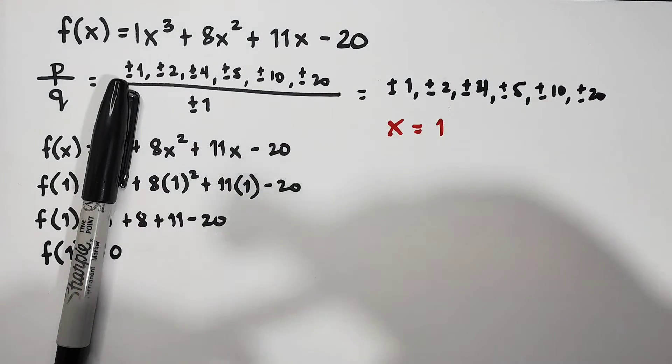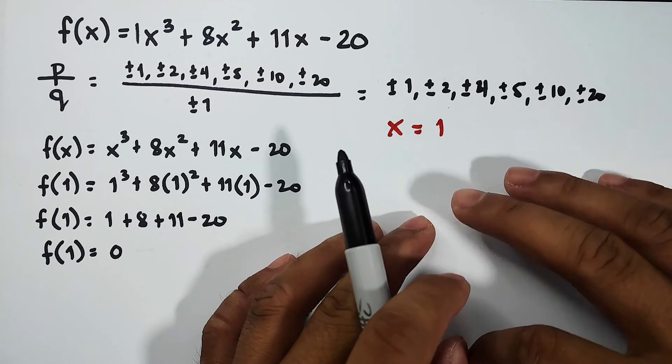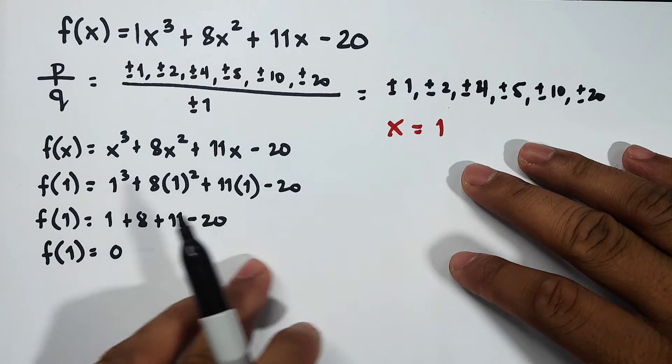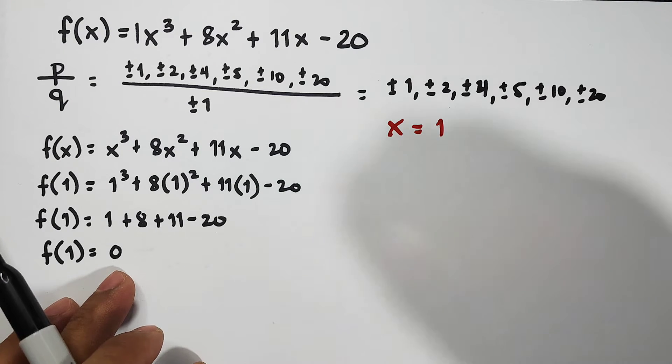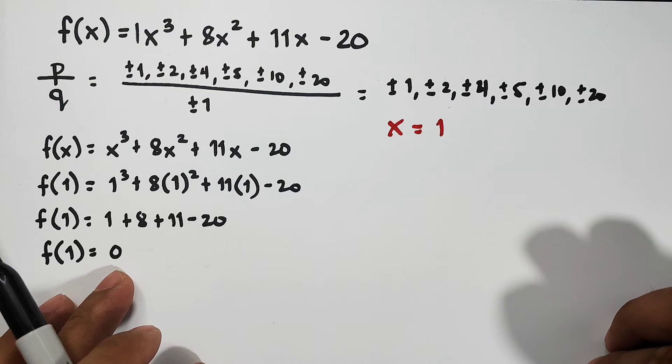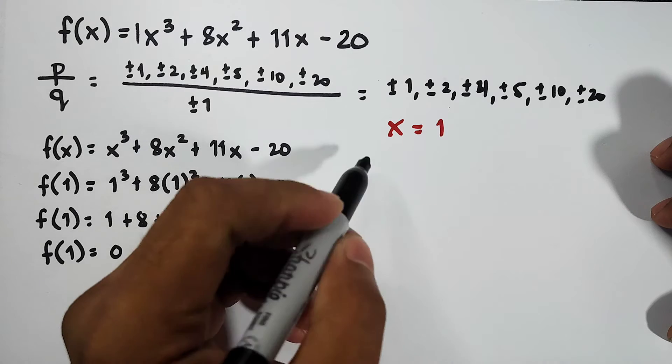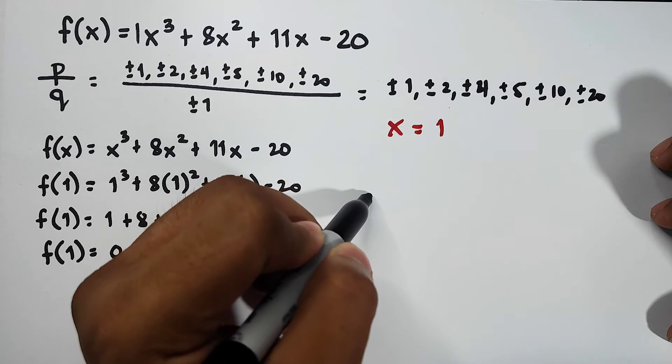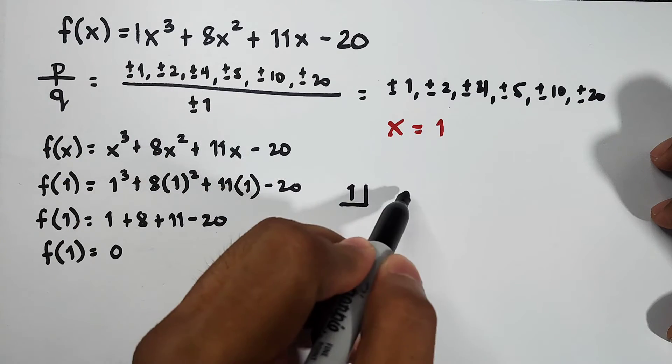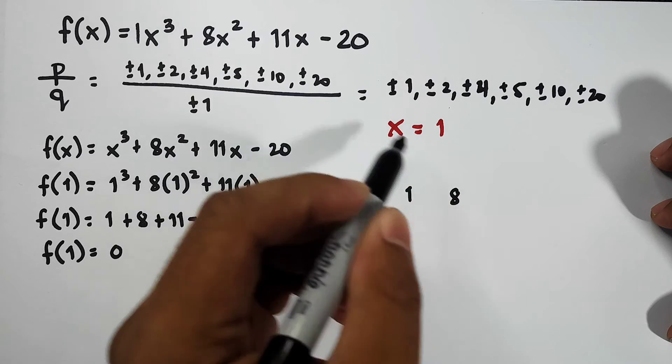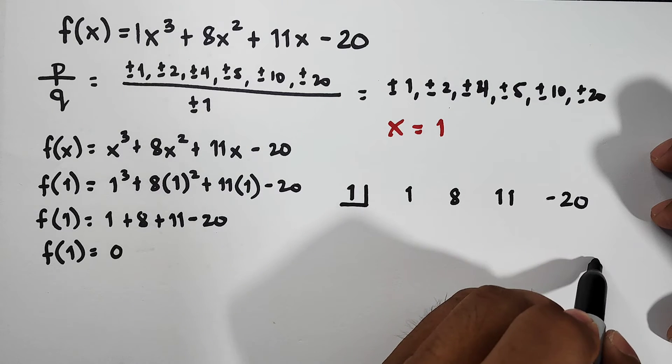Now after this, since we used the rational zero theorem to get the first factor and evaluated it in the given function and it became zero, we will use our knowledge about synthetic division to get the other zeros. So let's try this: put 1 here. The coefficients are 1, 8, 11, and -20. Again, synthetic division.